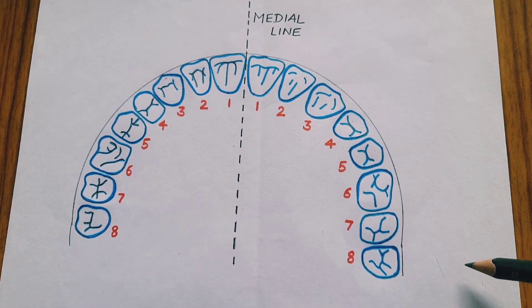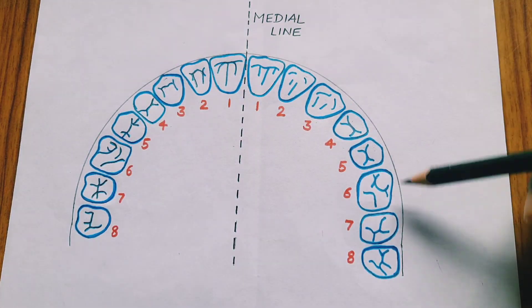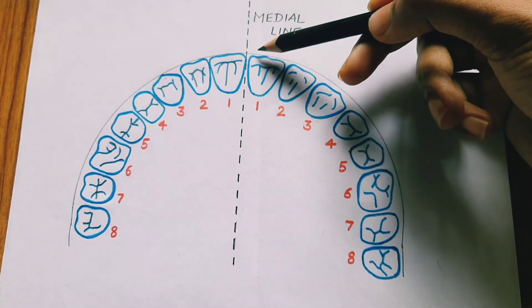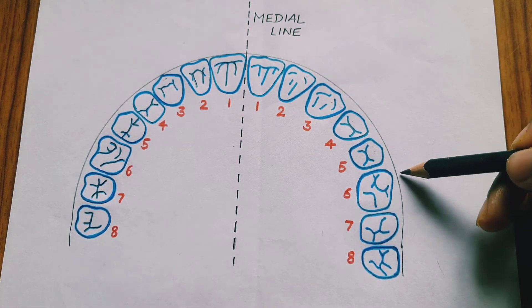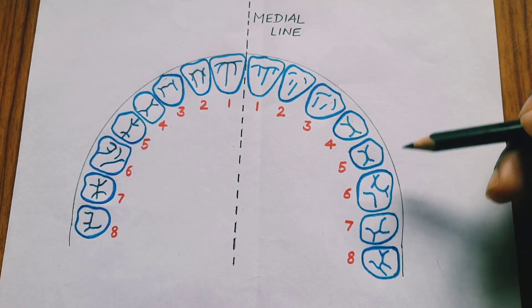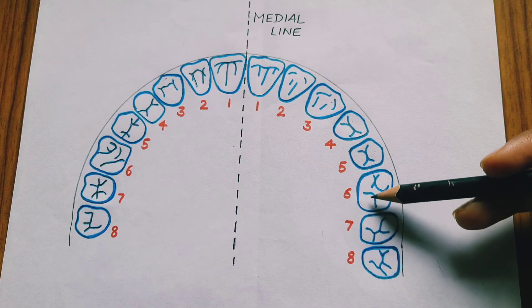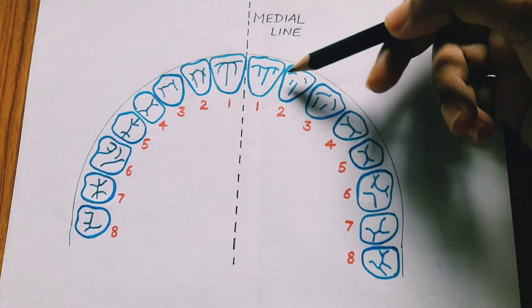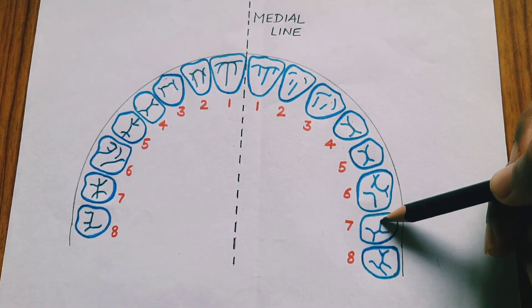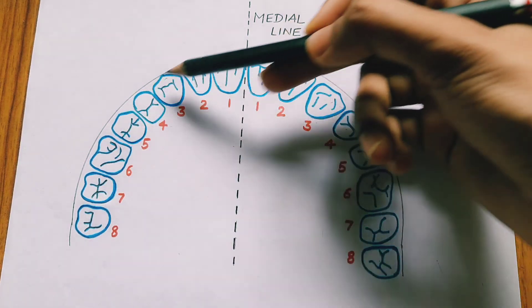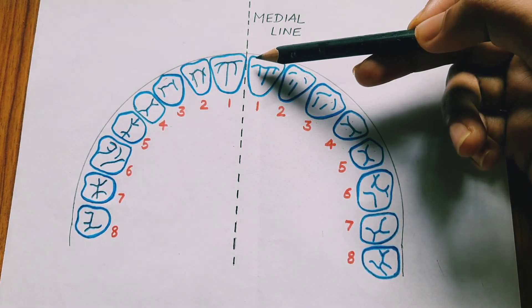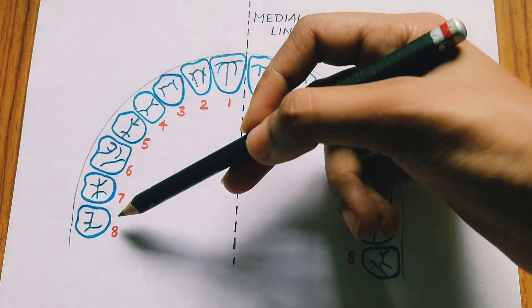Let us focus on the upper jaw first. If we divide the complete jaw in equal halves, we get two incisors, one canine, two premolars, and three molars. This makes up eight teeth on one side of the upper jaw — you can count one, two, three, four, five, six, seven, and eight. The same is the case with the other half, so eight and eight gives us 16 teeth in the upper jaw.